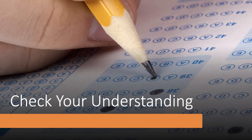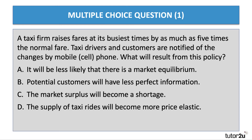Here are five past paper questions — a great chance to check your understanding of the price mechanism. Press the pause button if you want to take a few moments to think about your answer. Question one: a taxi firm raises fares at the busiest times by as much as five times the normal fare — we call that surge pricing. Taxi drivers and consumers are notified of this change immediately by mobile phone. What will result from this policy?